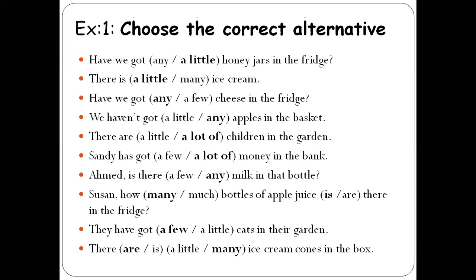Let me share my answers with you. See, have we got a little honey jar in the fridge? Number two: There is a little ice cream. Have we got any cheese in the fridge? We haven't got any apples in the basket. There are a lot of children in the garden. Sandy has got a lot of money in the bank. Ahmed, is there any milk in that bottle? Susan, how many bottles of juice are there in the fridge? They have got a few cats in the garden. There are many ice cream cones in the bowl.